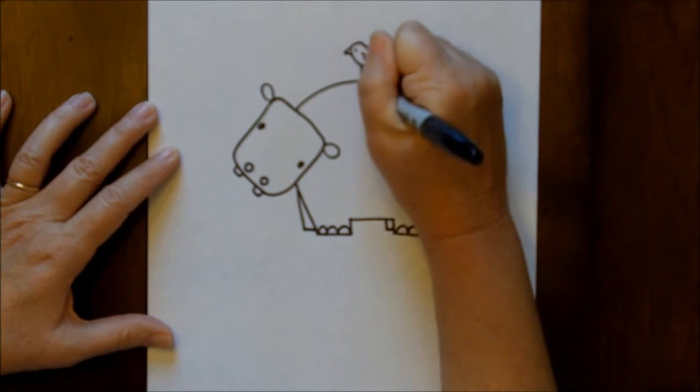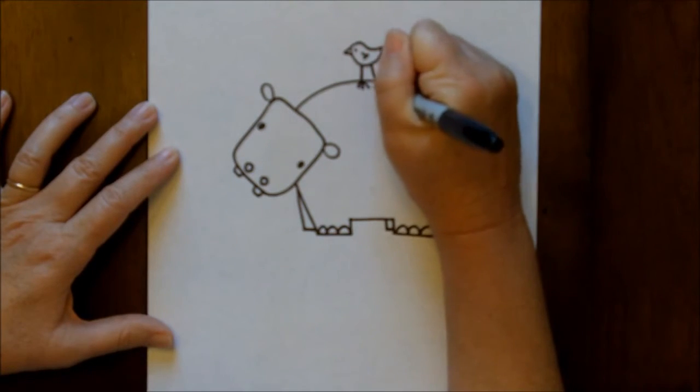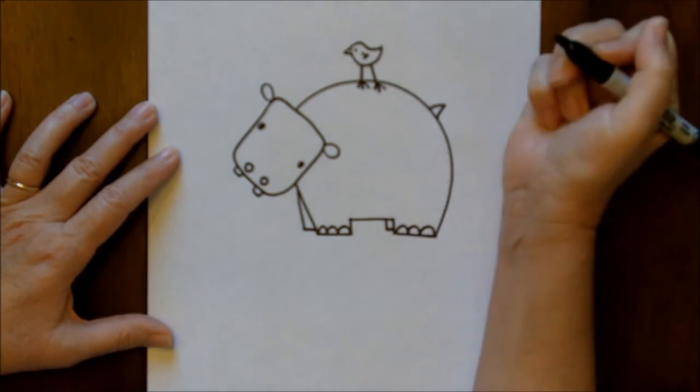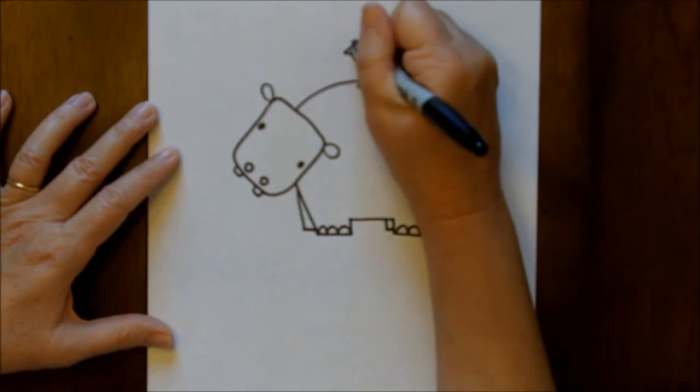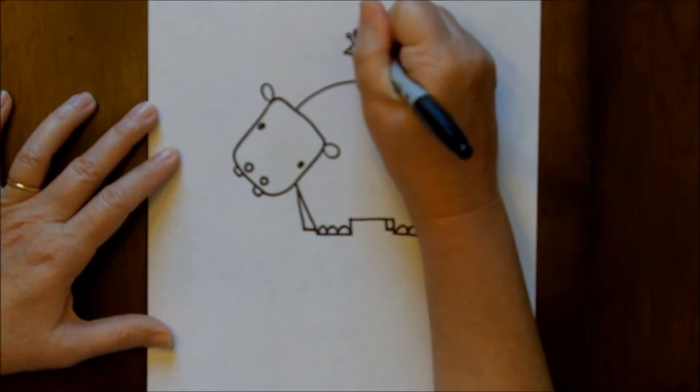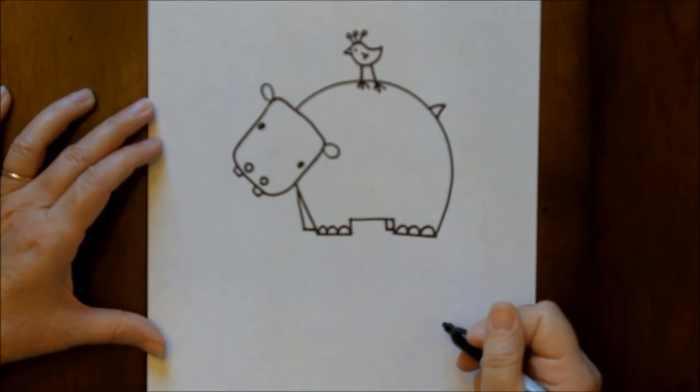Put some, just a curve, curvy type line attached to another curvy line with some feet coming down. Maybe a few little decorations at the top of the bird's head.